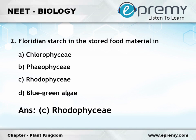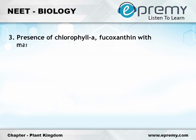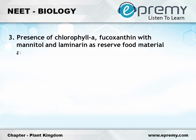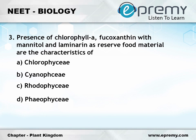Question number three: presence of chlorophyll a, c, fucoxanthin with mannitol and laminarin as reserve food material are the characteristics of option A Chlorophyceae, option B Cyanophyceae, option C Rhodophyceae, option D Phaeophyceae. The answer is option D Phaeophyceae.